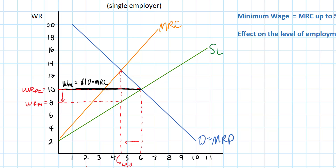The firm's profit-maximizing level of employment now equals 600 workers. Marginal resource cost equals marginal revenue product at 600 workers. The impact of the minimum wage is actually an increase in the level of employment.